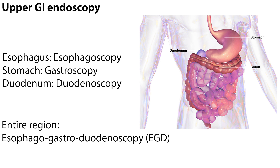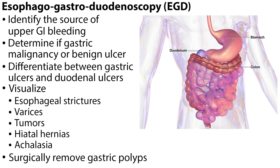An upper GI endoscopy may look at just the esophagus (esophagoscopy), the stomach (gastroscopy), or the duodenum (duodenoscopy). If it involves the entire region, it is called an esophagogastroduodenoscopy, more easily referred to as an EGD. This test is useful for identifying the source of upper GI bleeding and for determining whether there is a gastric malignancy or benign ulcer. It can also differentiate between gastric ulcers and duodenal ulcers. An EGD can visualize esophageal strictures, varices, tumors, hiatal hernias, and achalasia, as well as surgically removed gastric polyps.